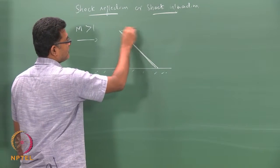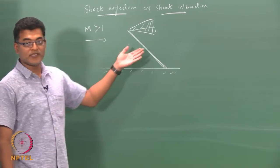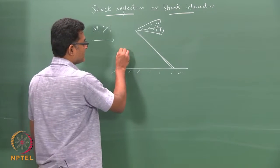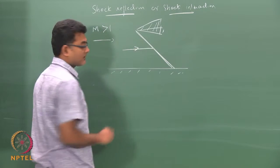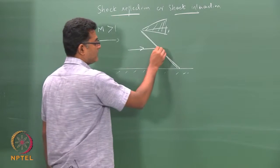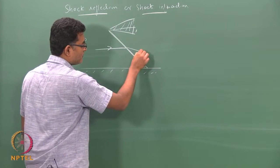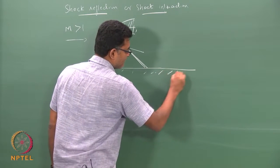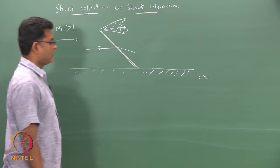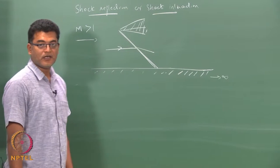This may be due to a body kept at some angle, or whatever — let us forget about the reasons why we have a shock here. As we know, there will be a velocity vector coming in, and streamlines that, because of the shock, will undergo a turn. Now, if this is an infinitely long plate, the flow somewhere has to turn back in line with the surface.